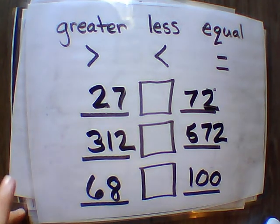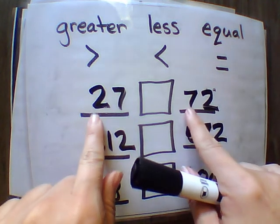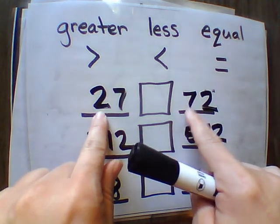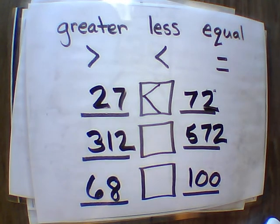All right. So I'm going to go through this quickly. 27 and 72. Touch the tens. Notice more tens. 72. So 27 is less than 72.